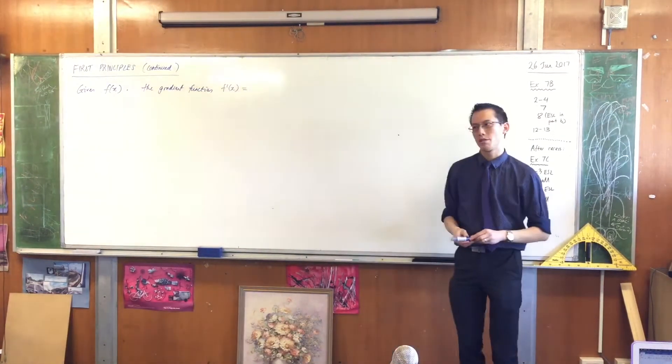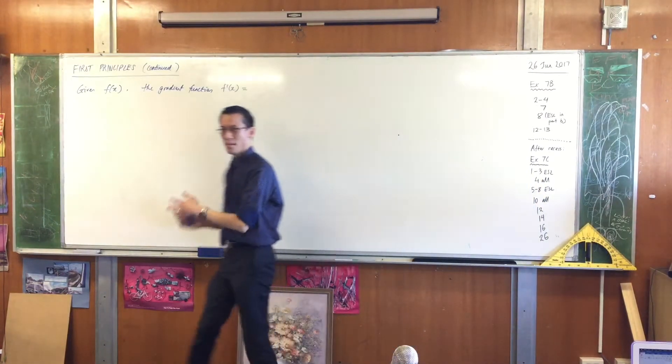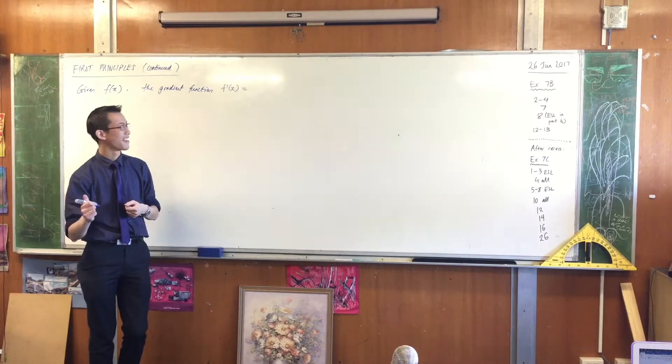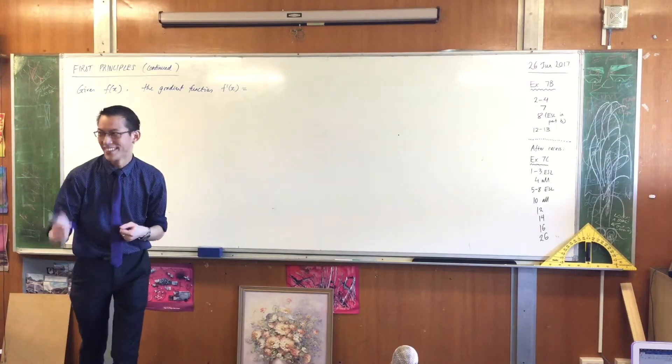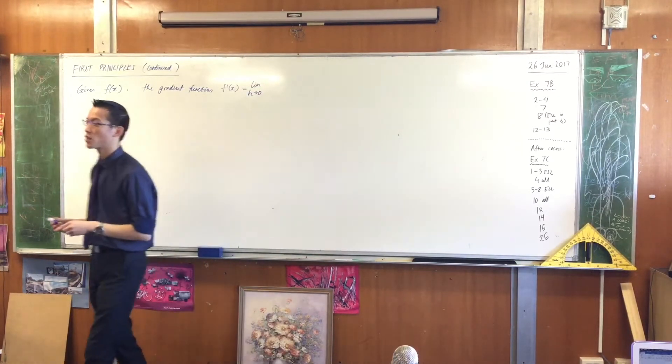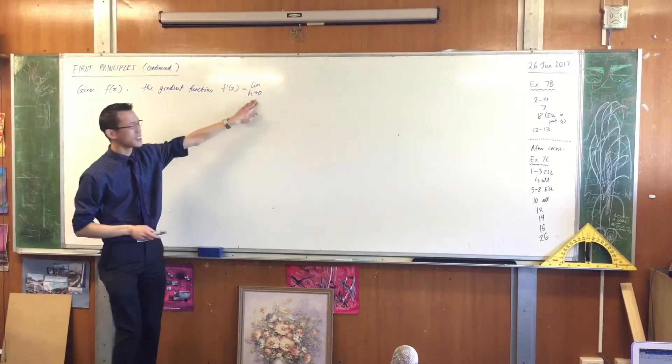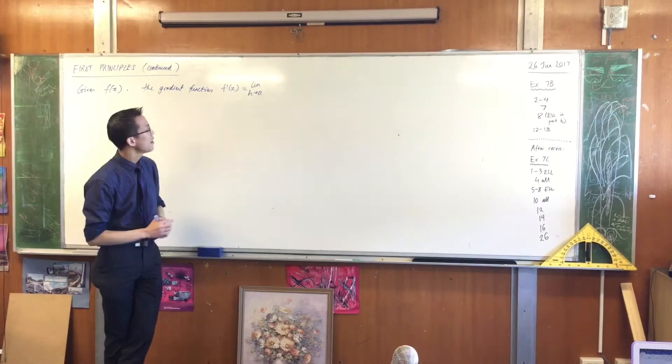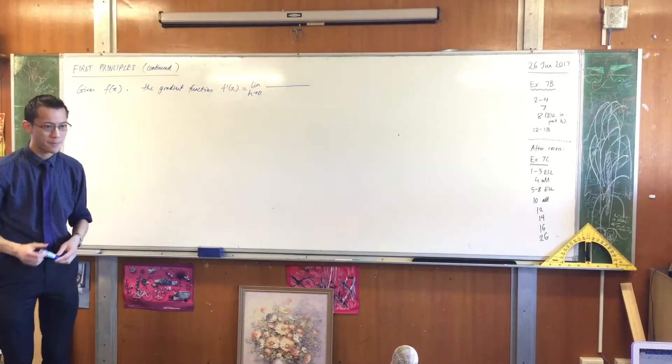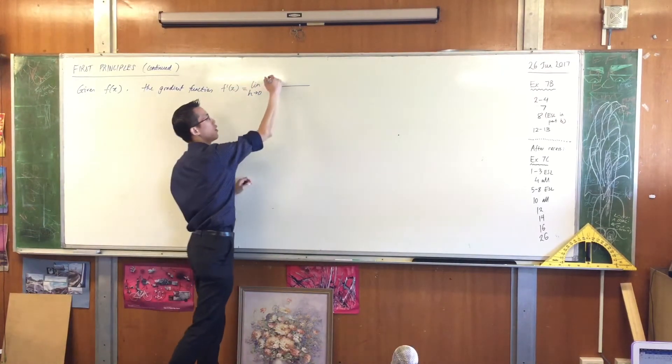We did all this fancy geometry with rise over run and secants and tangents to come up with this right hand side which is a bit of a mess but has two important pieces. The first piece is the limit, because we want a tangent at a single point not a secant at two points. We want the distance between these two points to be zero. Then what follows is this fraction. The fraction is just gradient, just rise over run.